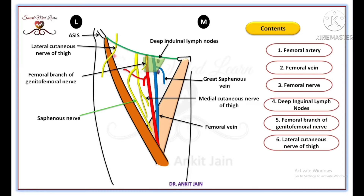The femoral branch of the genitofemoral nerve supplies most of the skin over the femoral triangle. The last content is the lateral cutaneous nerve of the thigh, which crosses the lateral angle of the femoral triangle. So the main contents of the femoral triangle are: the femoral artery and its branches, femoral vein and its tributaries, femoral nerve, deep inguinal lymph nodes, femoral branch of the genitofemoral nerve, and the lateral cutaneous nerve of the thigh.